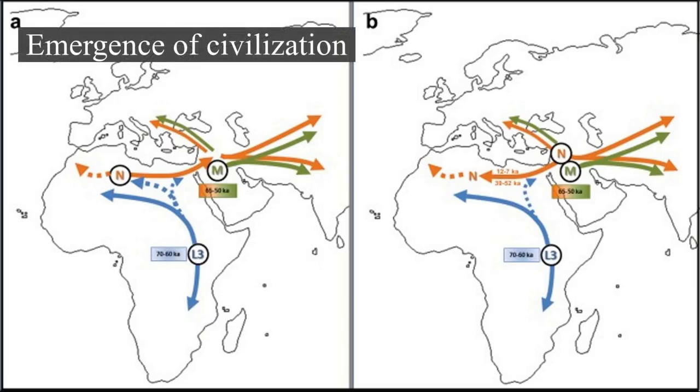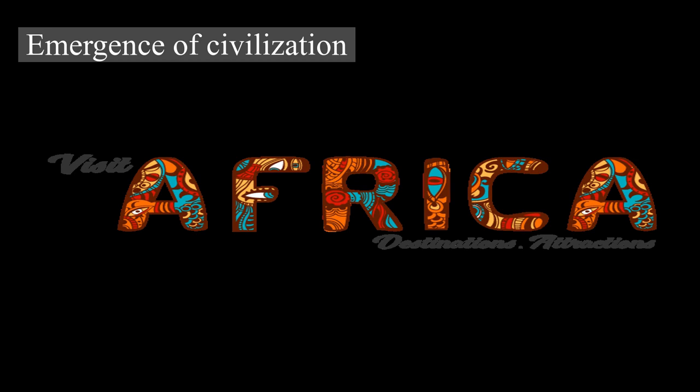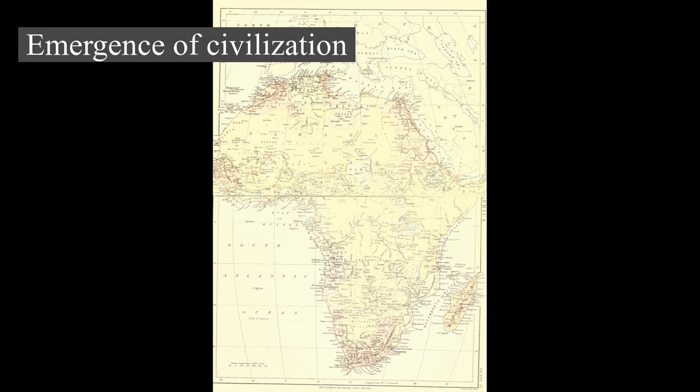Emergence of Civilization: The size of the Sahara has historically been extremely variable, with its area rapidly fluctuating, and at times disappearing depending on global climatic conditions. At the end of the ice ages, estimated to have been around 10,500 BC, the Sahara had again become a green fertile valley, and its African populations returned from the interior and coastal highlands in sub-Saharan Africa, with rock art paintings depicting a fertile Sahara discovered in Tassili n'Ajjer dating back perhaps 10 millennia.